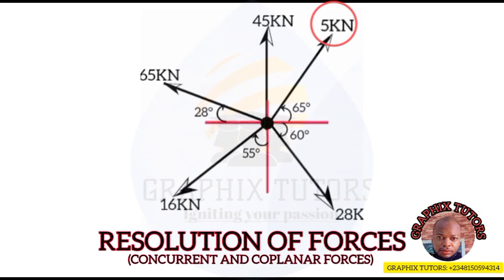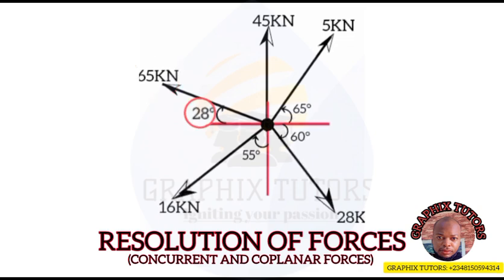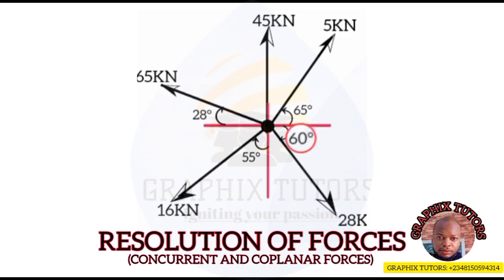The forces acting at the point of concurrence are: the 5 kilonewton acting at an angle of 65 degrees to the horizontal, the 45 kilonewton acting at an angle of 90 degrees, the 65 kilonewton acting at an angle of 28 degrees to the horizontal, the 16 kilonewton acting at an angle of 55 degrees to the vertical, and the 28 kilonewton acting at an angle of 60 degrees to the horizontal.